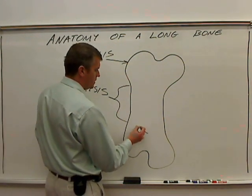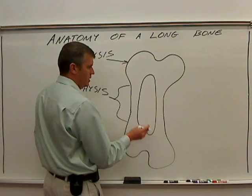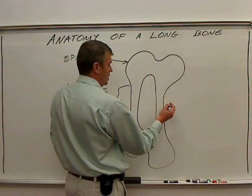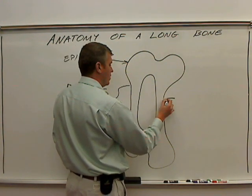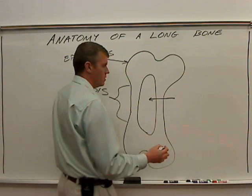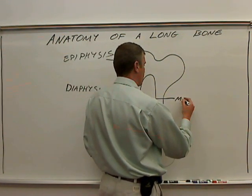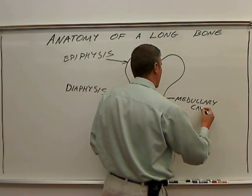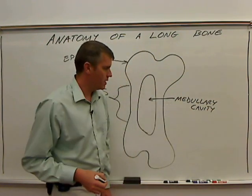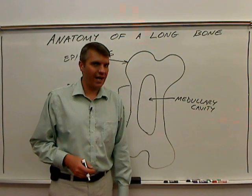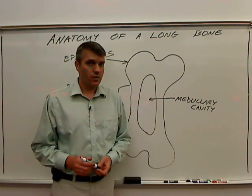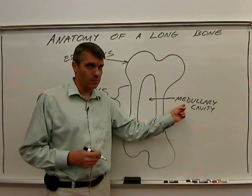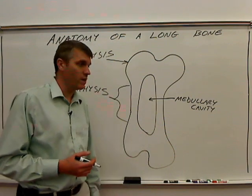Inside the bone there's going to be a long cavity, and in that cavity you will find yellow bone marrow. It can be called the marrow cavity, but historically I've always called it the medullary cavity. If you want to use 'marrow cavity' because it's easier, that's okay on an exam. For multiple choice though, you might want to have 'medullary cavity' in your head in case that's the only option listed.